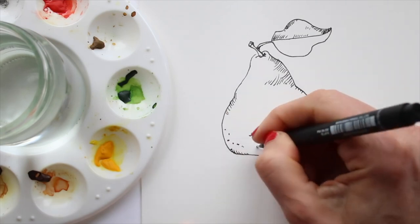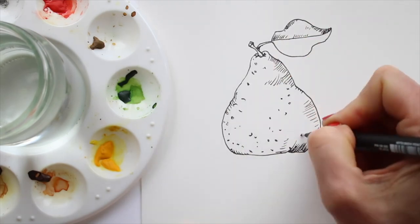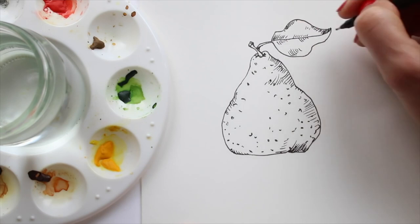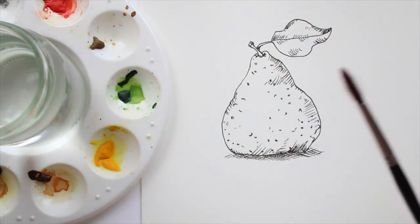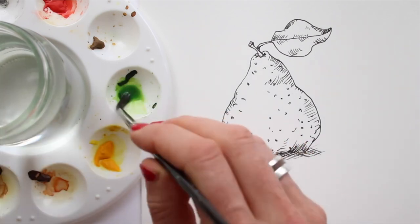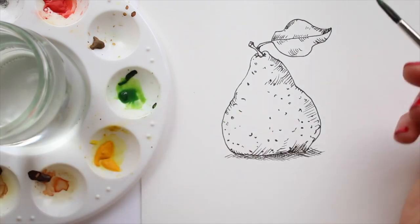With hatching lines and marks, I add shading and try to indicate the texture of the skin of the piece of fruit. With some cross-hatching, I add a drop shadow as well, so the pear doesn't float on the paper but actually sits on a surface.